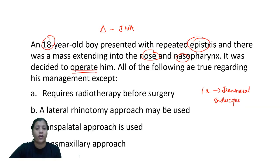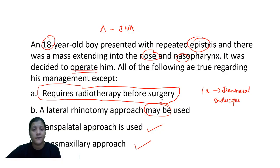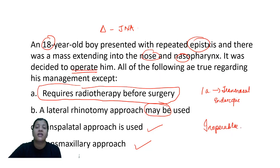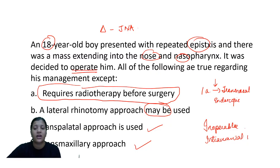A lateral rhinotomy may be used, a transpalatal approach may be used, a transmaxillary approach may be used — but radiotherapy has no role in JNA for stage 1A. Radiotherapy is given only when the tumor is inoperable — when there is extensive intracranial extension or direct supply from the internal carotid artery. For inoperable tumor, you give radiotherapy. Radiotherapy is not required for stage 1A limited only to the nose or nasopharynx.